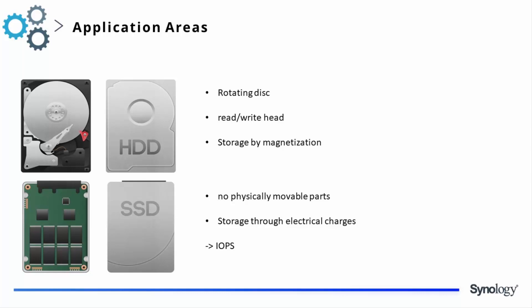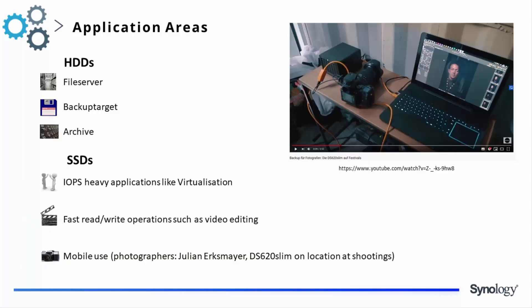SSD memory also runs much faster. The benchmark used is the number of IOPS — input/output operations per second — which shows that SSD memory is about 300 times faster than a hard drive. This is especially important for those planning to use virtualization tools, where high IOPS makes a significant difference.